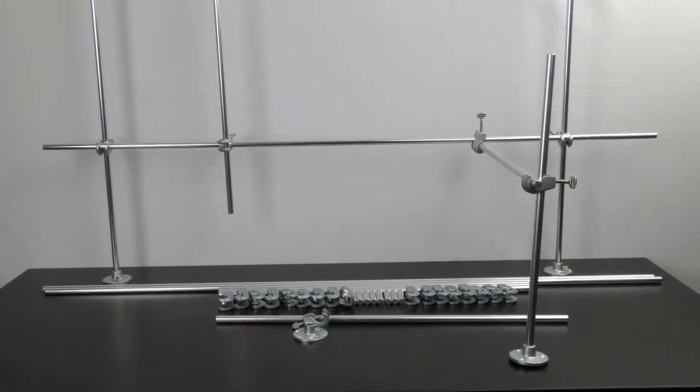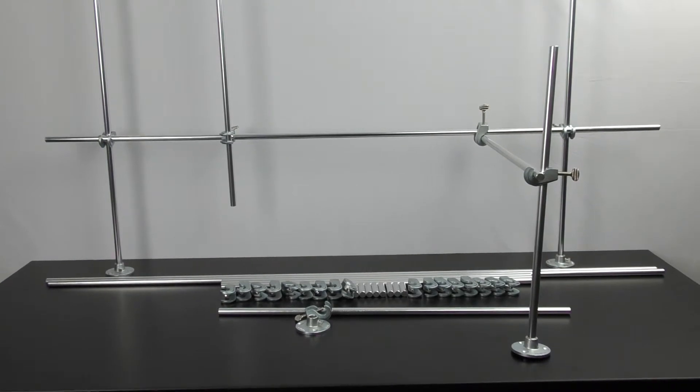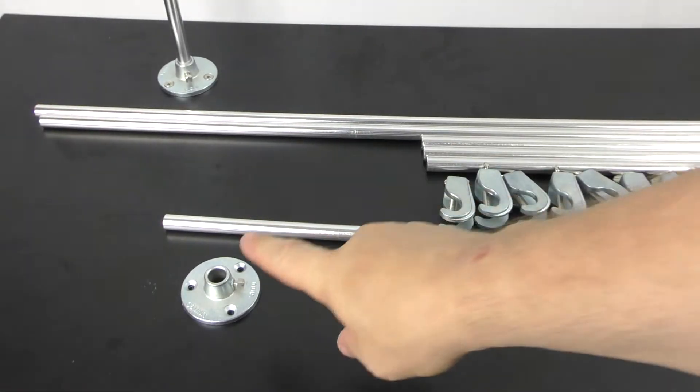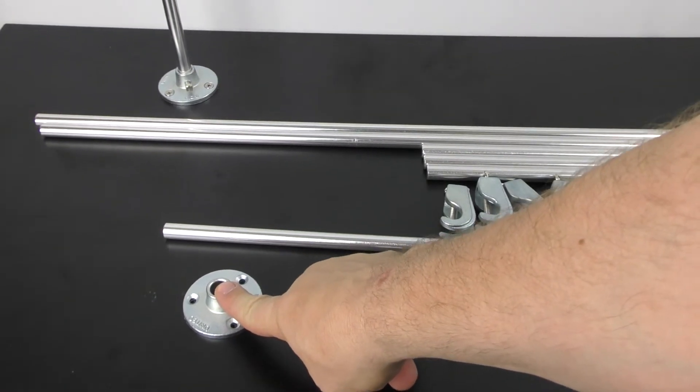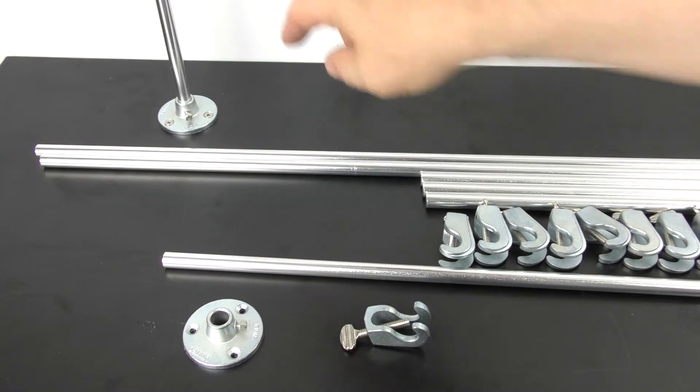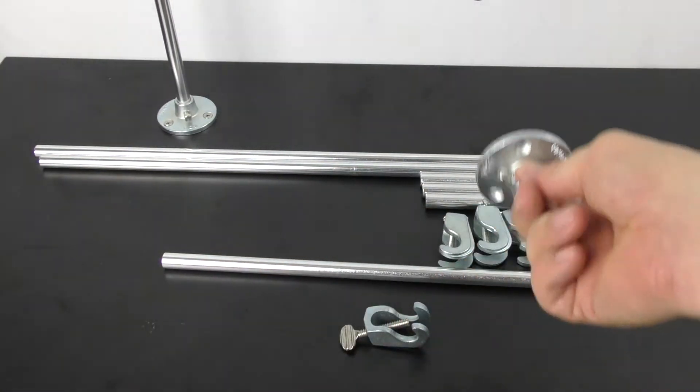The great thing about this system is the simplicity of the parts that are involved. The three basic parts are the footer, which can be mounted to a tabletop, as I've done here, or you can also mount this directly to the wall.